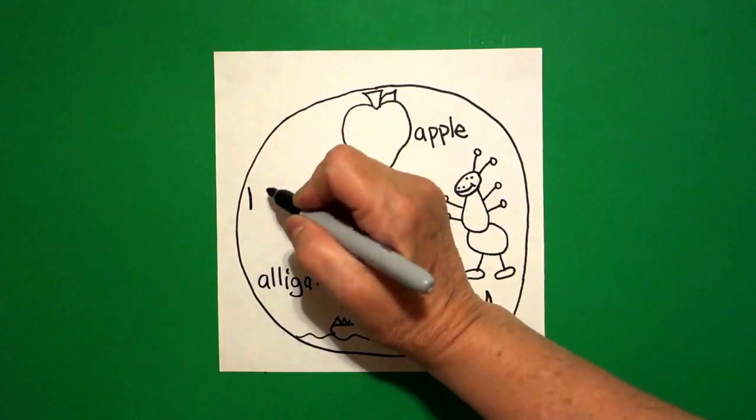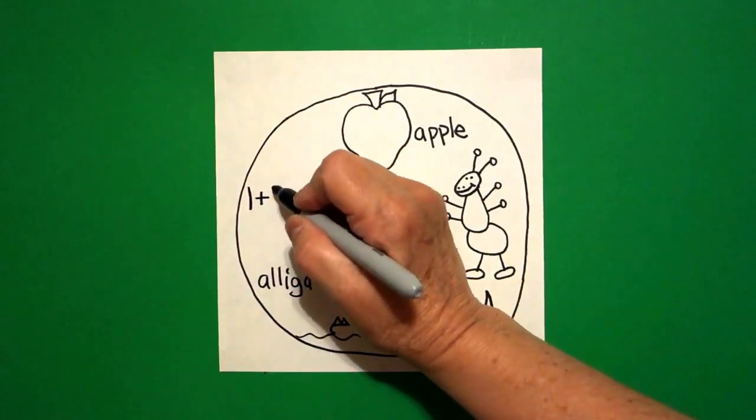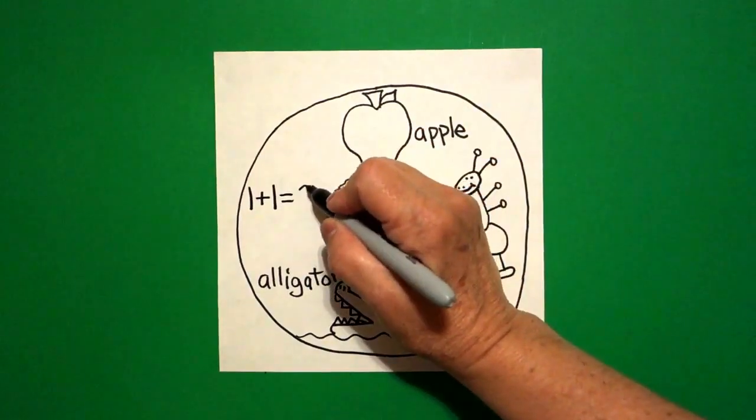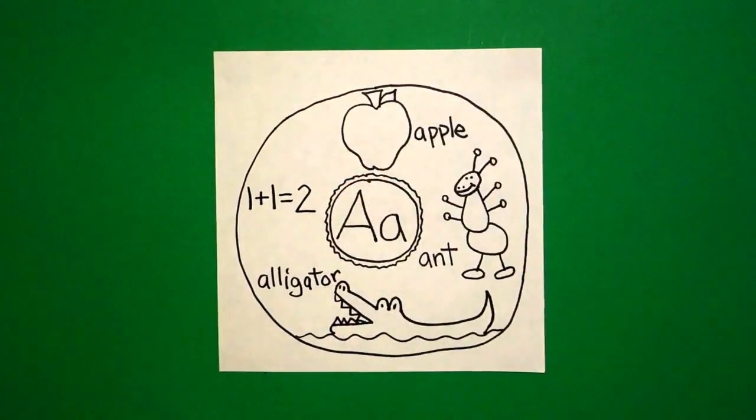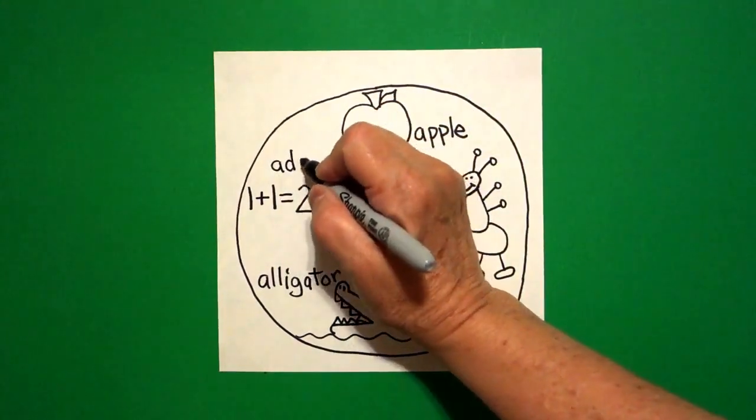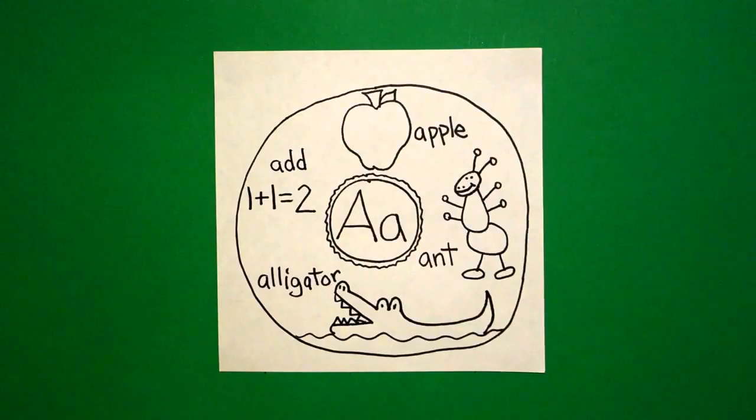Now this next one is super easy. We're going to write a number one plus a number one equals two. Beginning sound, ah, that's right, add, A, D, D.